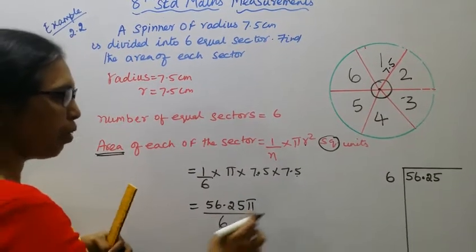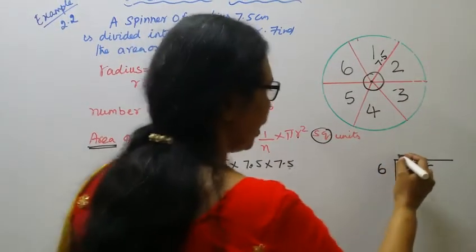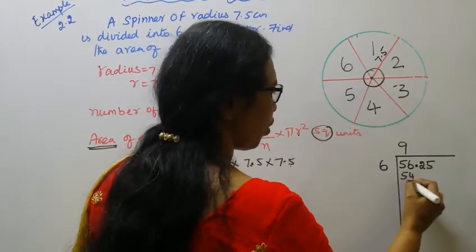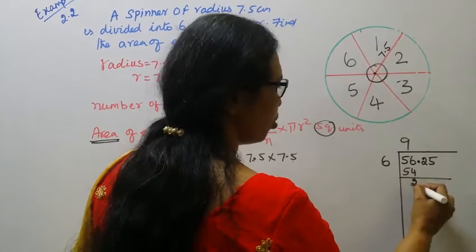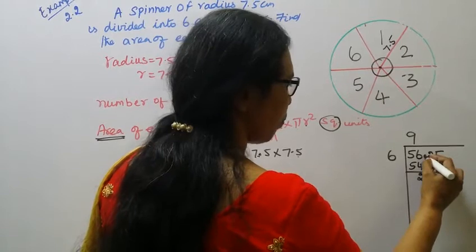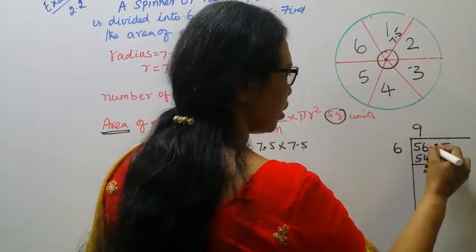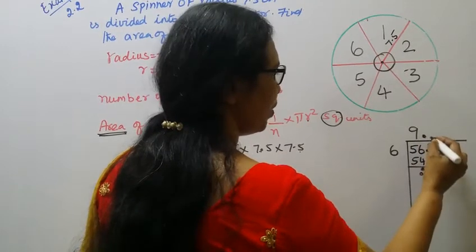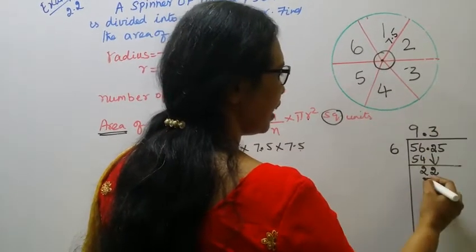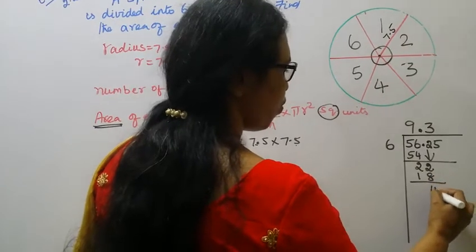56.25 divided by 6: 9, 6 into 54, balance 2. 22 divided by 6 is 3, 6 into 18, balance 4.